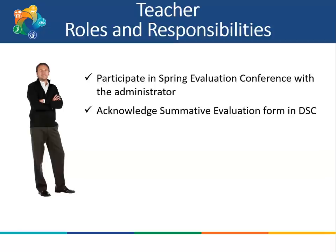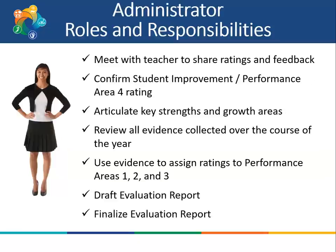After participating in the Spring Conference with the administrator, the teacher will acknowledge the Summative Evaluation Report form in the DSC. The administrator will meet with the teacher to share their ratings and feedback, confirm the Student Improvement or Performance Area 4 rating, articulate key strengths and growth areas for the teacher, review all evidence collected over the course of the year, and use that evidence to assign ratings to Performance Areas 1, 2, and 3. They will draft and then finalize the evaluation report to share with the teacher.